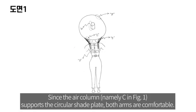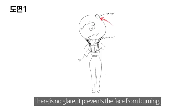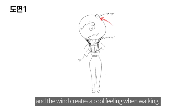Since the air column, namely C in figure 1, supports the circular shade plate, both arms are comfortable. Because the circular shade plate, namely B in figure 1, creates a shade, there is no glare, it prevents the face from burning and the wind creates a cool feeling when walking.